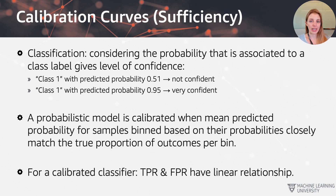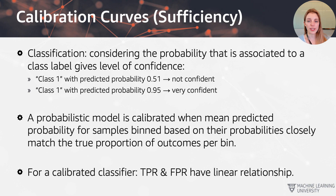Moving on to calibration curves, which technically fall under the criteria of sufficiency. In a classification example, the output of a probabilistic classifier is the confidence of belonging to a certain class. For example, a predicted probability of 0.51 means we're not very confident — it's just barely above the threshold of 0.5, and a few decimal points lower would flip the class label.